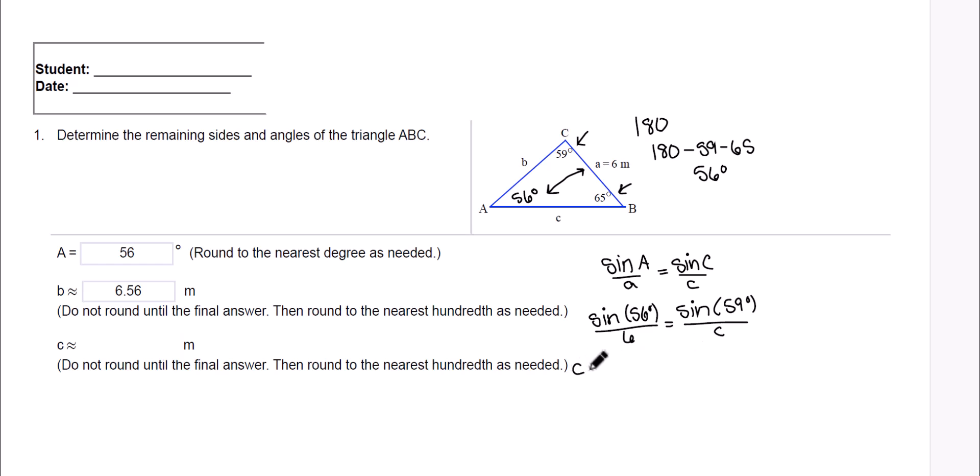Let me write it out for you. We're going to take C times the sine of 56 degrees equals 6 times the sine of 59 degrees. Now I want to get C by itself, so what I'm going to do is I'm going to divide both sides by the sine of 56 degrees. And I'm going to write that out here so everyone can see what I'm doing.